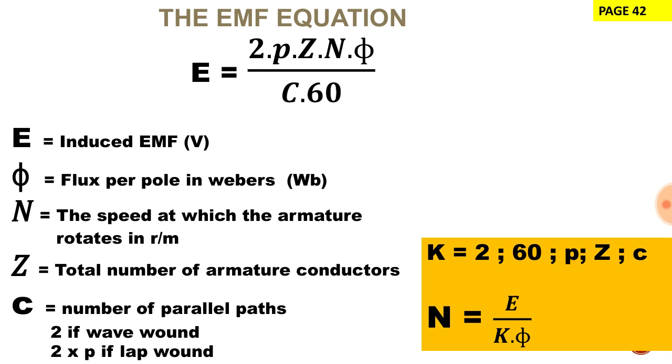Below the line we have small letter c which represents the total number of parallel paths inside our armature assembly. If our armature assembly is wave-wound it means that c will be equal to 2 and that will be a constant. If our armature assembly is lap-wound it means that the number of parallel paths depends on how many pole pairs there are. So we will say 2 multiplied by the number of pole pairs.